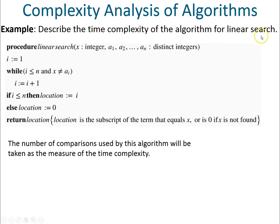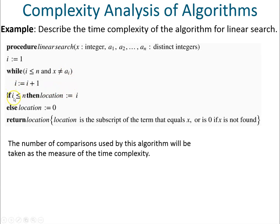This is the linear search algorithm, which we also went through in section 3.1. Describe the time complexity of the algorithm for linear search. We're going to use the same procedure and look at the number of comparisons used in this pseudocode. You could count other operations like the assignment operator, but comparisons are what the book uses. Looking at the pseudocode, we have three comparisons going on.